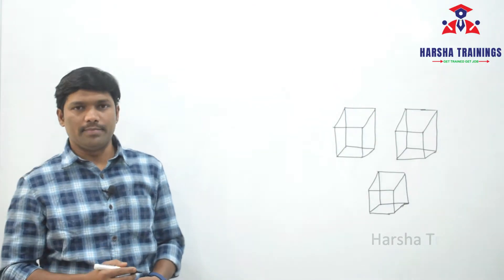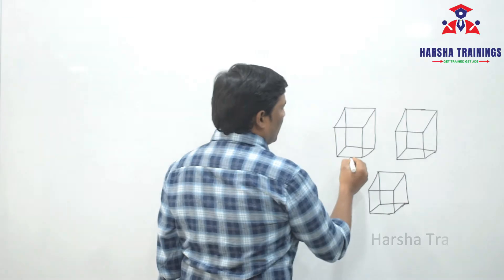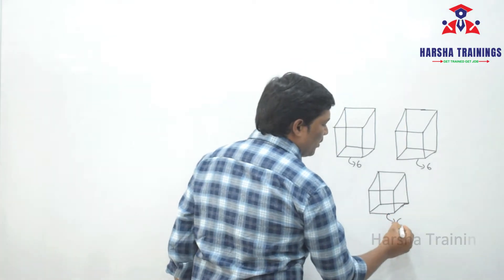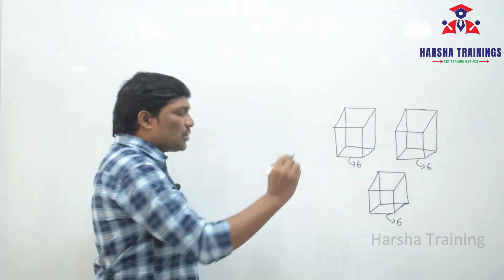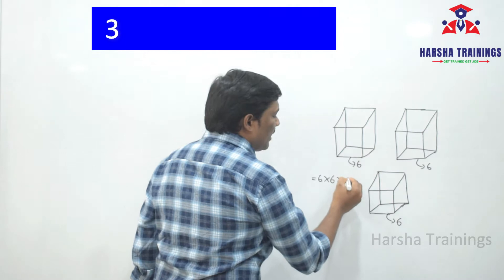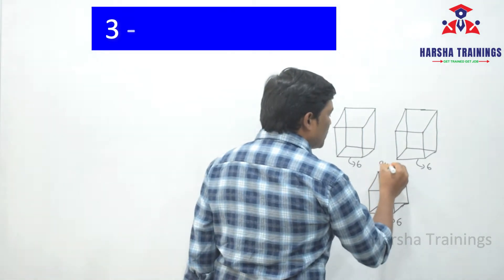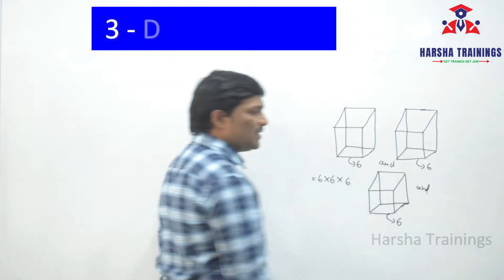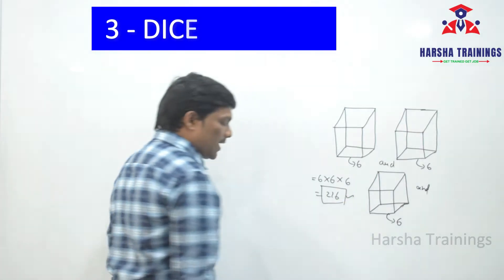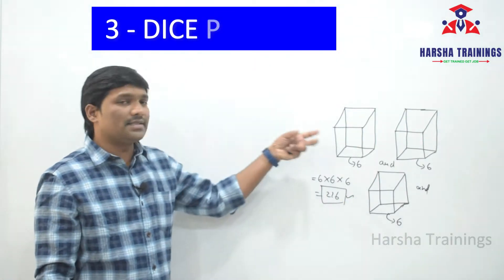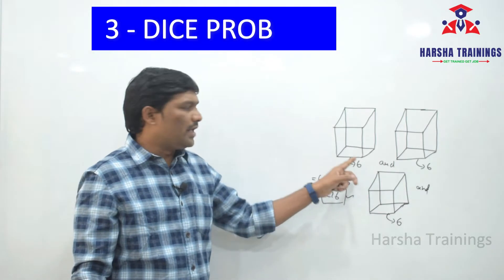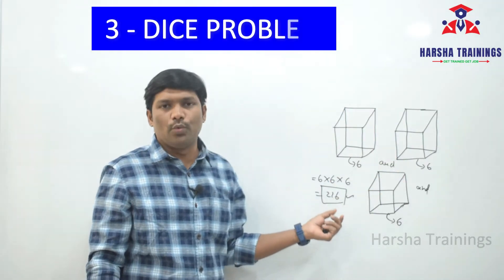Coming to the three dice problems. The first die has six chances, the second die has six chances, and the third die has six chances. Three dice are thrown — first die and second die and third die — the conjunction is 'and,' so 'and' means multiplication. Then 6 cubed is how much? 216. So the total number of cases is 216.